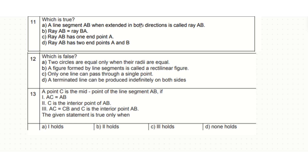A line segment AB extended in both directions is called ray AB — false, because a ray extends in only one direction. Ray AB is not equal to ray BA. Ray AB has only one endpoint, which is A, and extends towards B. So ray AB has one endpoint. Hence option C is correct.